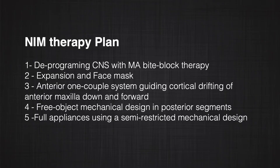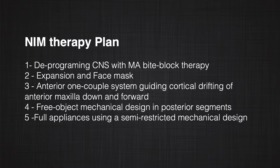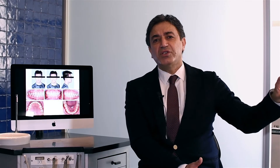In this patient, we went through the whole steps of the NIM treatment. We started with correcting the central nervous system using a specific biplotropy — MA biplotropy — and then we addressed the sutures at the same time, enhancing the response to the face mass and expansion through specific procedures to increase the number of osteoclasts in the sutural area. As part of the stimulation of cortical drifting, we used a one-couple system mechanics that can stimulate the bone to migrate forward and downward in the anterior part of the maxilla. After addressing all this, we applied regular orthodontic treatment through free object design sectional mechanics and semi-restricted design full setup.